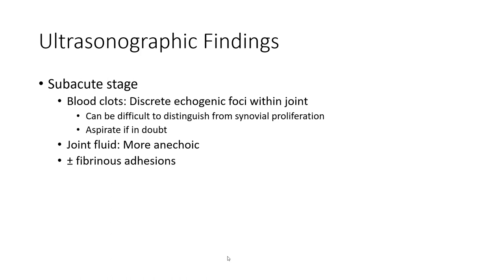In the subacute state, blood clots appear as discrete echogenic foci within the joint fluid, the joint fluid becomes more anechoic, plus or minus fibrinous strands.